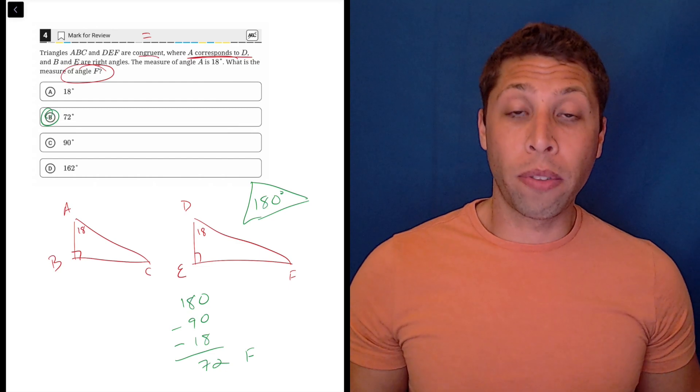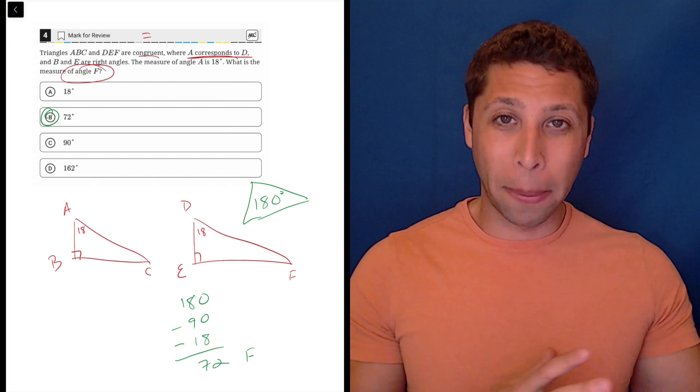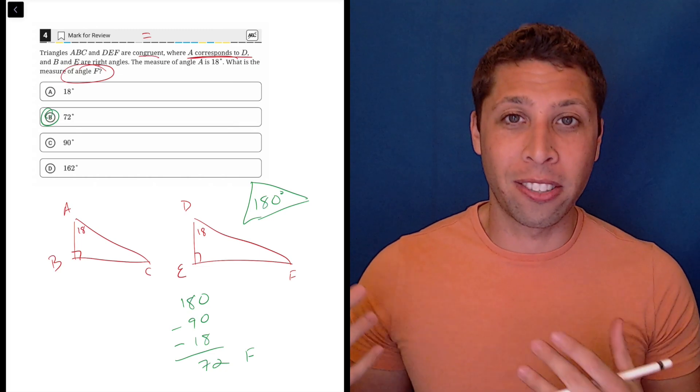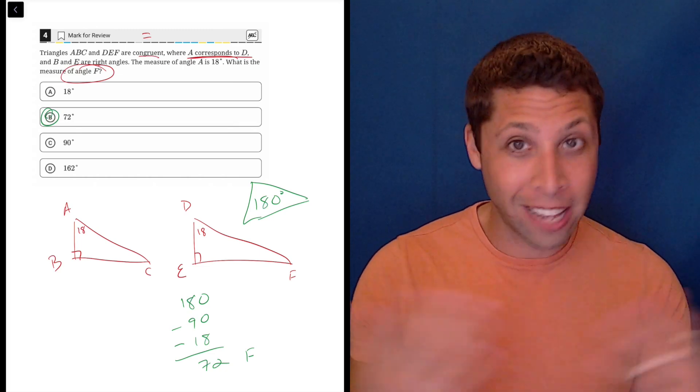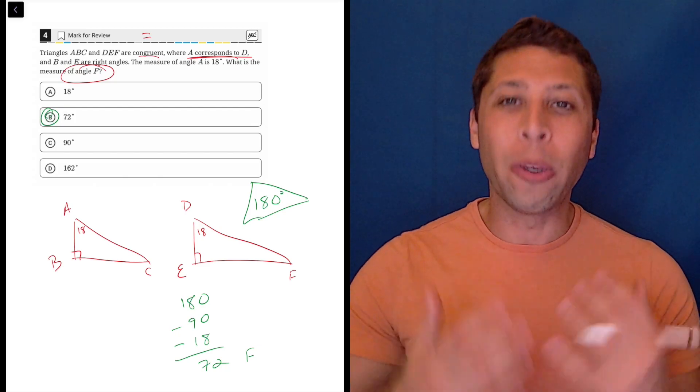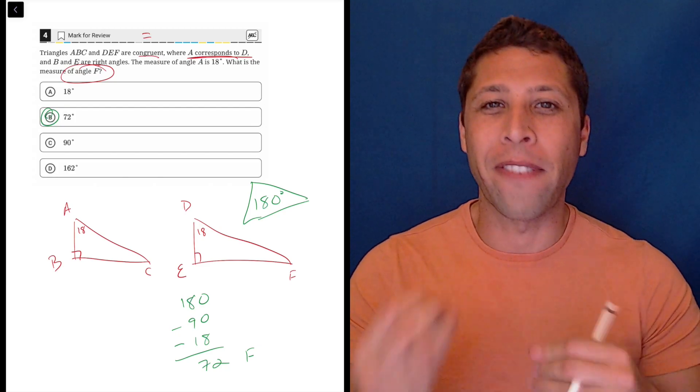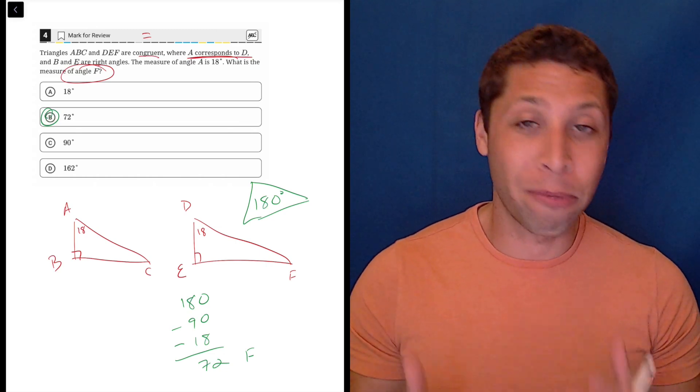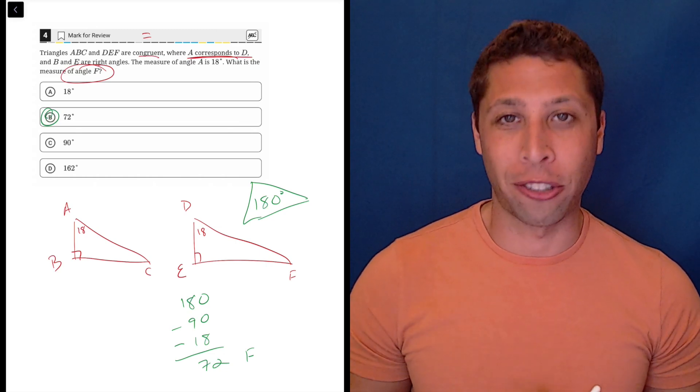So a lot of questions with congruent triangles are going to get more complicated as we get later in the test. There's a lot of rules about how we know things are congruent, but here they're not asking us to prove anything congruent. They're just telling us that they are. And so we do need to know that that word is kind of like a fancy geometry word that just means equal. So use that, draw some pictures, and these should be easy questions.